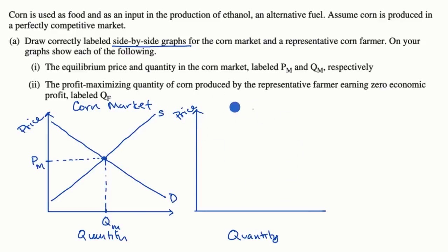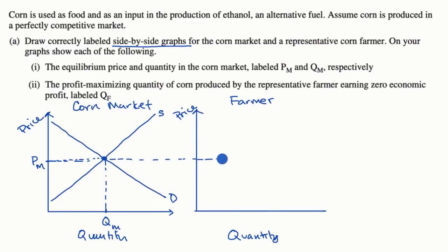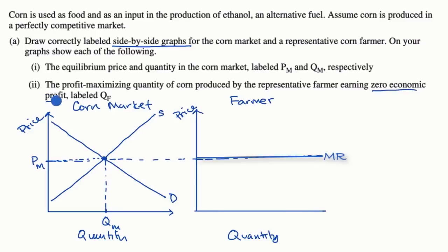Now this graph on the right is for the farmer. The farmer is a price taker, so whatever the equilibrium price is in the market, that is the price the farmer has to take. That market price is going to be the farmer's marginal revenue. We need to find the profit-maximizing quantity Q sub F, which is also a point of zero economic profit.